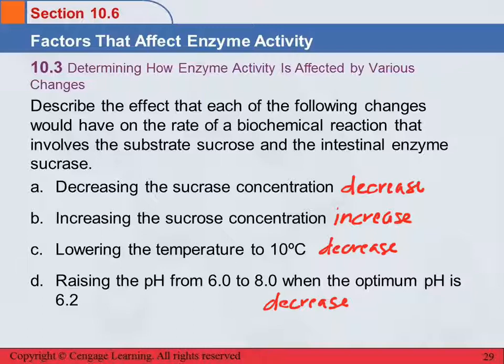Equipment in hospitals is sterilized in an autoclave, which uses high-pressure steam to superheat and get the temperature above 100°C. That causes the enzymes in viruses and bacteria to become denatured, killing the germs. So understanding enzyme activity and what affects it has a lot of practical applications.